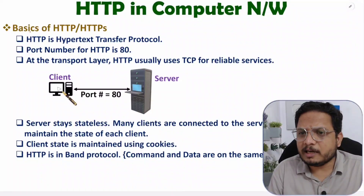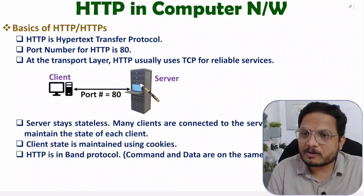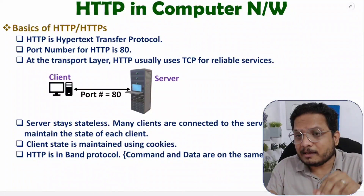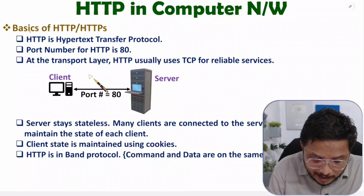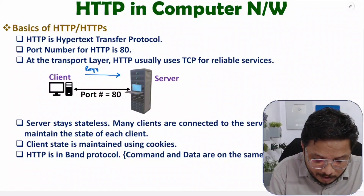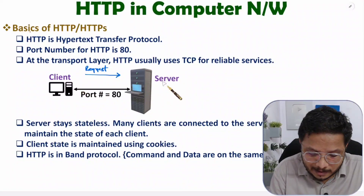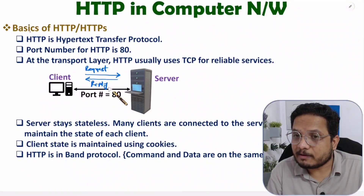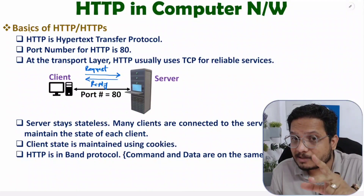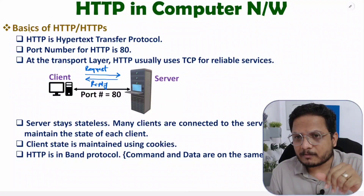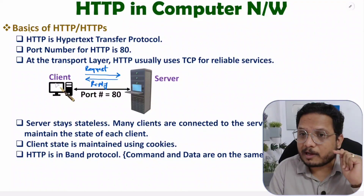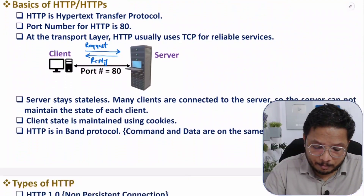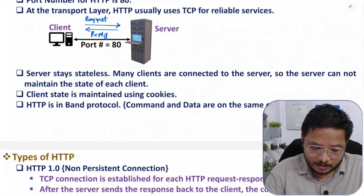Let me give you an analogy of how HTTP functions. Here we have a client and a server belonging to Google. When the client types 'http://www.google.com', the client sends a request to the server. The server sees the request and replies back. This request-and-reply data exchange happens between client and server. The port number for HTTP here is 80.